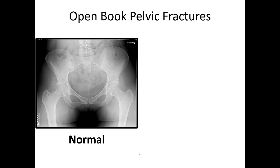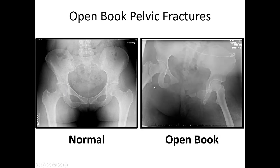On X-ray, a normal pelvis shows a nice closed pelvic ring with the femoral heads in proper position. In contrast, a patient who underwent severe anterior-posterior compression shows an open book pelvic fracture — the pubic symphysis is splayed open, the sacroiliac joint is dislocated, and in this case there's also a femoral neck fracture. This pelvis underwent very significant trauma, and this patient is likely pretty hemodynamically unstable.